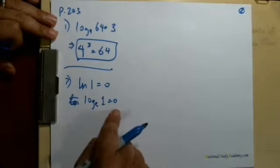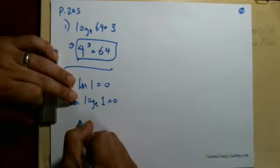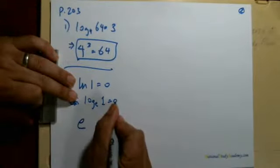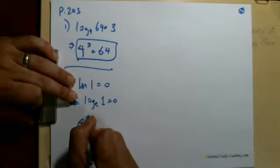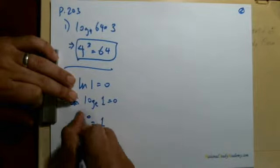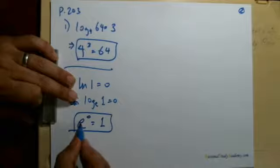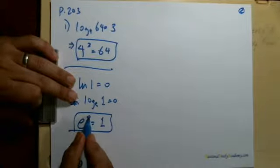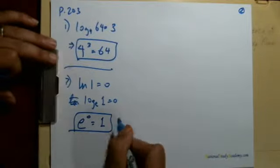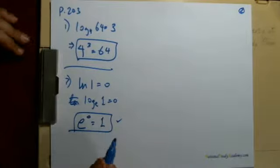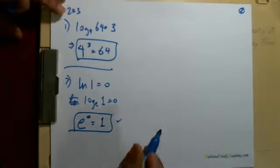To change from logarithmic state to an exponential state, we start with the base again. E to the number, which is the exponent, is equal to 1. Is that true? Oh, definitely. Any number to the zero power is always 1. So that checks out.